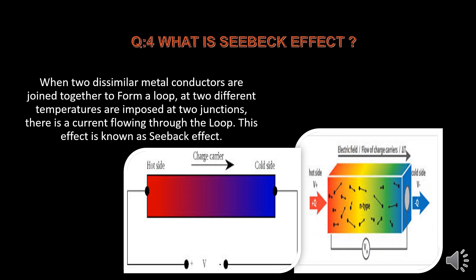What is the Seebeck effect? When two dissimilar metal conductors are joined together to form a loop, and two different temperatures are imposed at the two junctions, there is a current flowing through the loop. This effect is known as the Seebeck effect, and this is the working principle of thermocouple type temperature sensing devices.